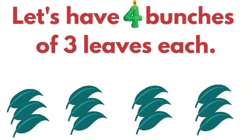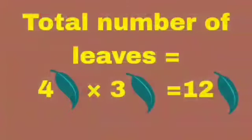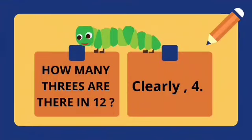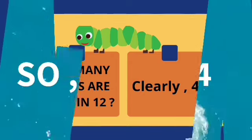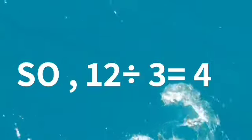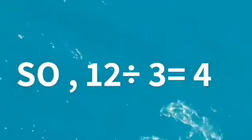Let's have 4 bunches of 3 leaves each. Total number of leaves are 4 times 3 is equal to 12 leaves. How many 3's are there in 12? There are 4 3's in 12. So 12 divided by 3 is equal to 4.